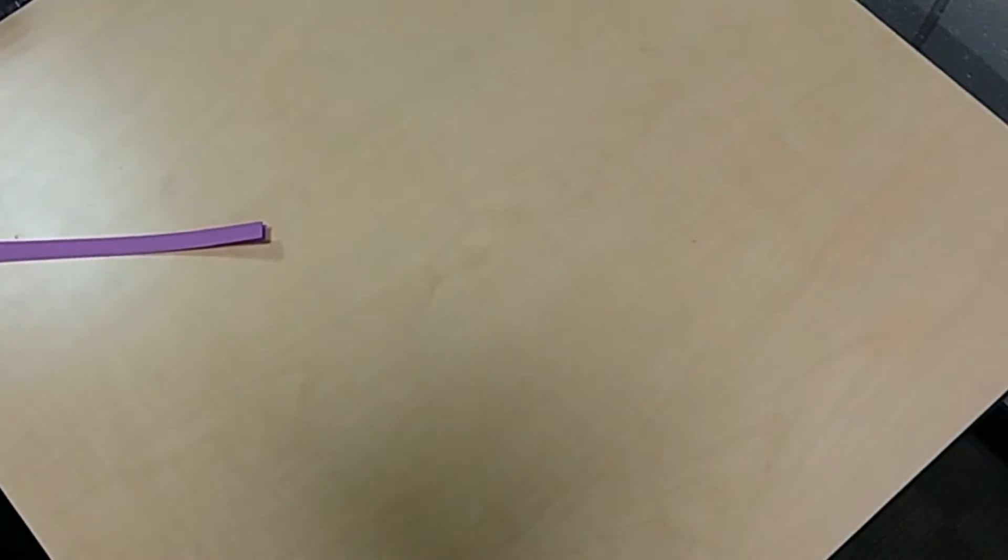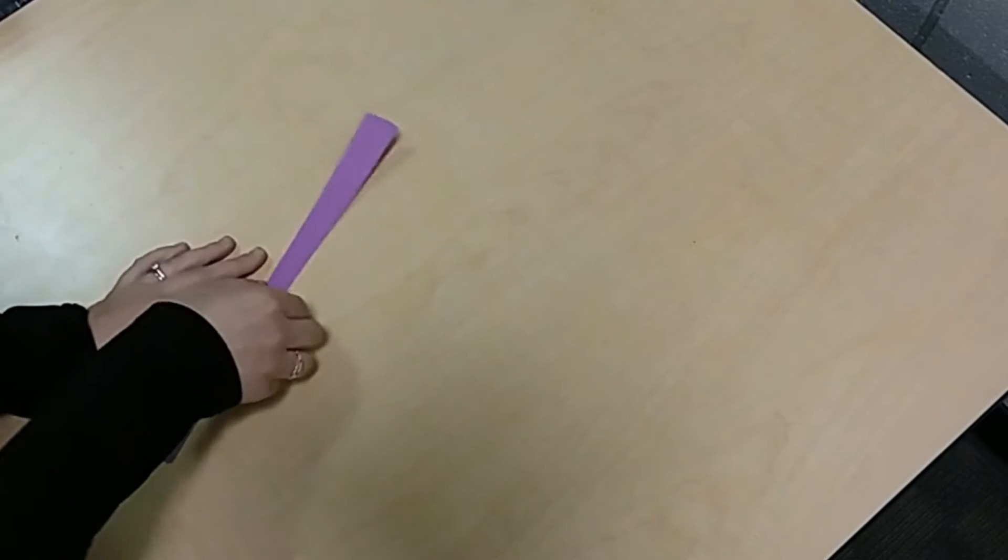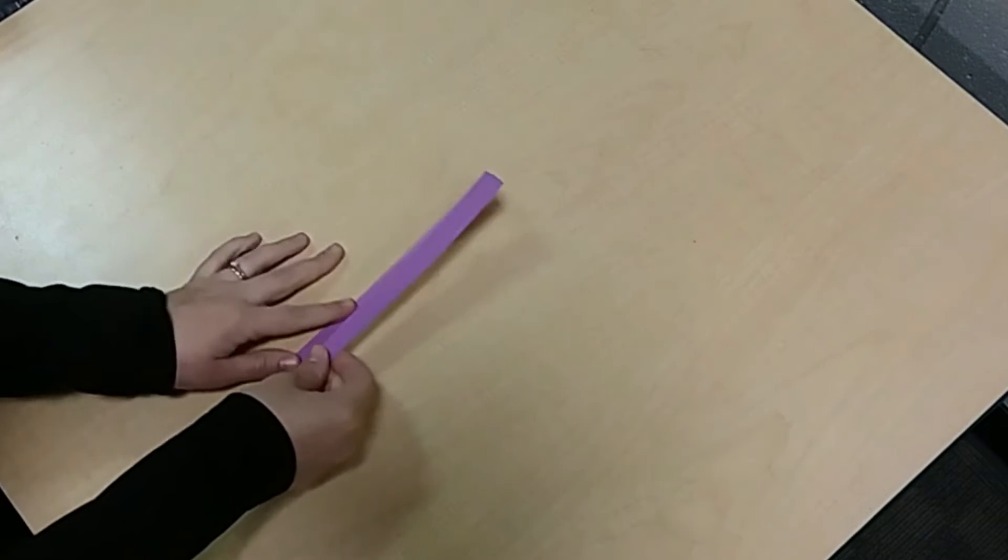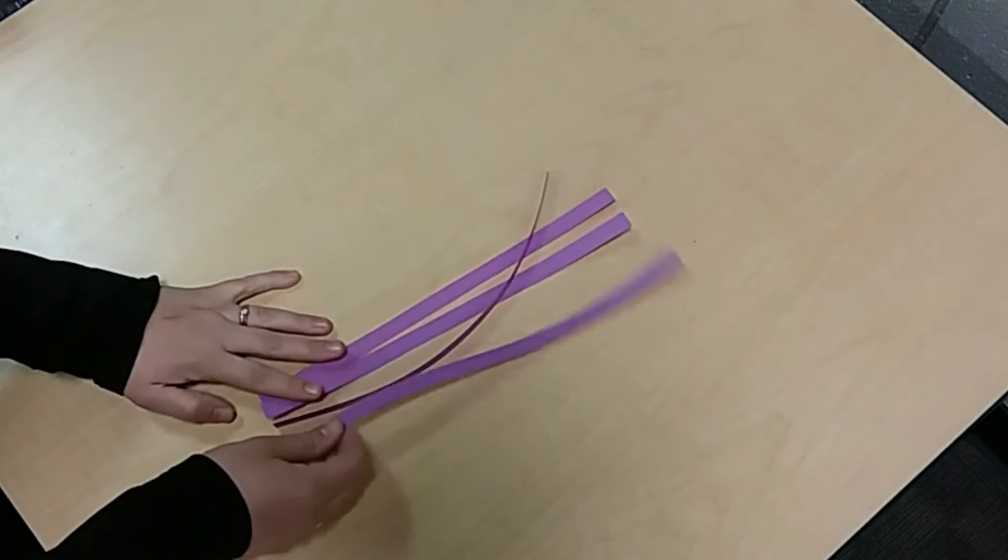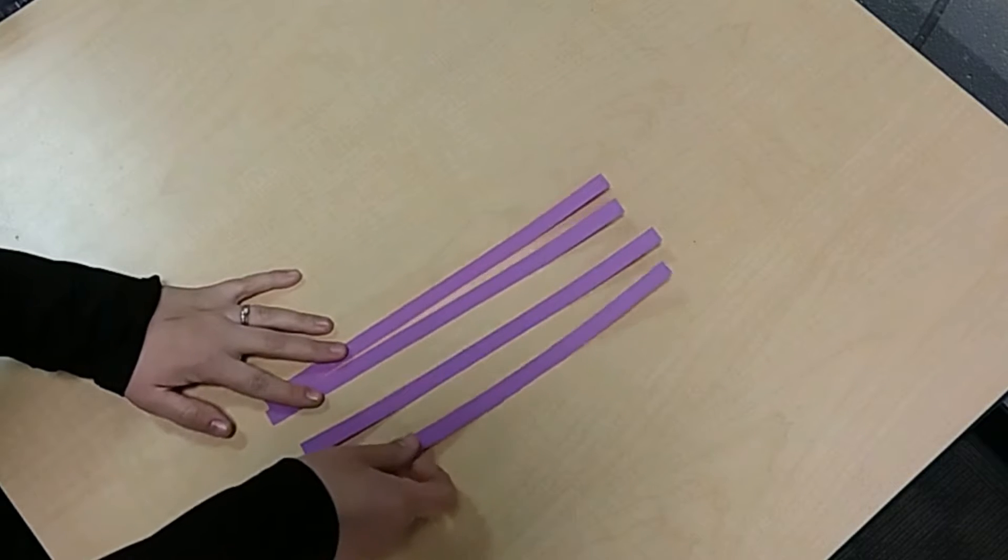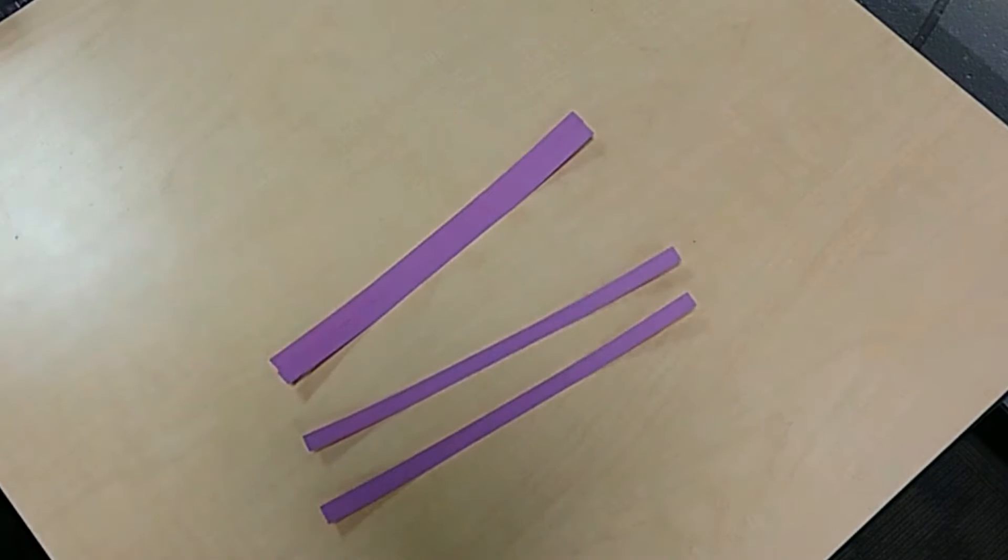First we're going to start by making the bottom part of the rabbit with our long pieces of construction paper. Pull the long pieces out of your bag.